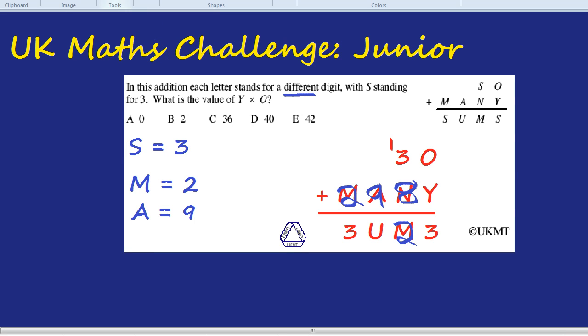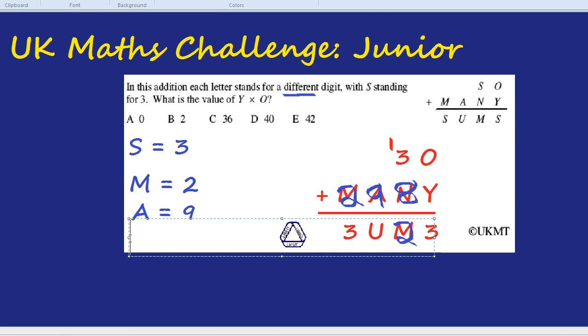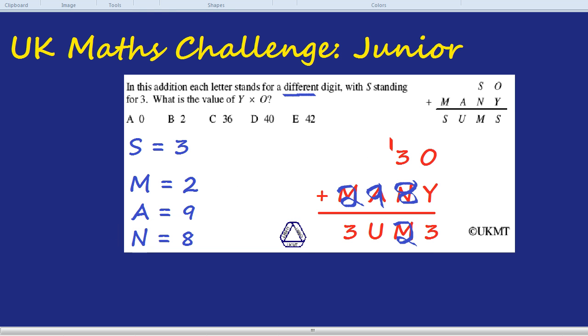But we've used up the 9, because A is 9. We've used up the 8, because N equals 8. So it can't be either of those two combinations. So it has to be 6 and 7.